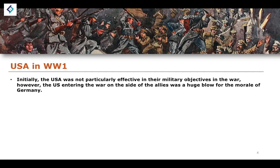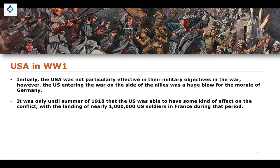Initially, the USA was not particularly effective in their military objectives in the war. However, the USA entering the war on the side of the Allies was a huge blow for the morale of Germany, who were struggling enough trying to fight Britain, France, and the Russian Empire. It was not until the summer of 1918 that the US was able to have any real effect on the conflict, when they landed nearly 1 million US soldiers in France. The mobilization of US forces was a very slow process.